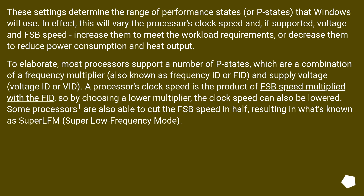Most processors support a number of P states, which are a combination of a frequency multiplier, also known as frequency ID or FID, and supply voltage, or voltage ID (VID). A processor's clock speed is the product of FSB speed multiplied by the FID, so by choosing a lower multiplier, the clock speed can also be lowered. Some processors are also able to cut the FSB speed in half, resulting in what's known as super low frequency mode.